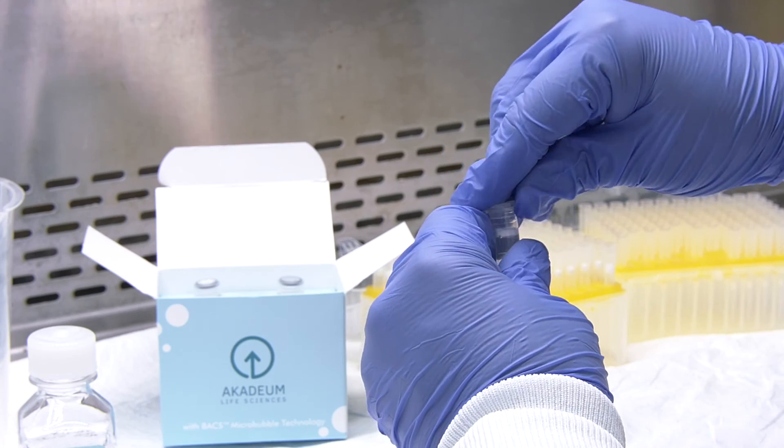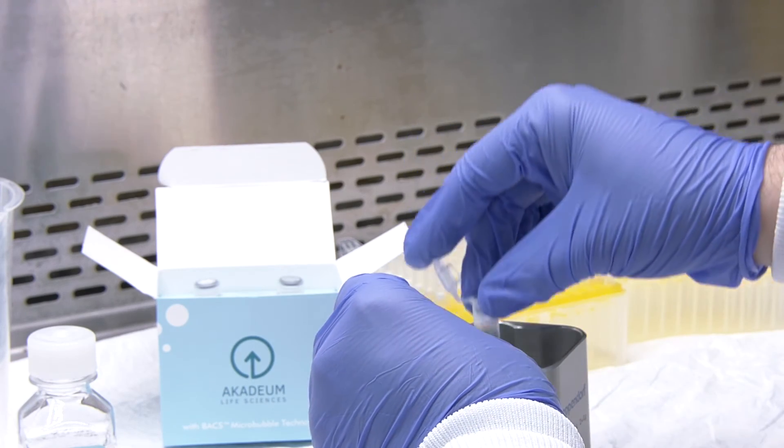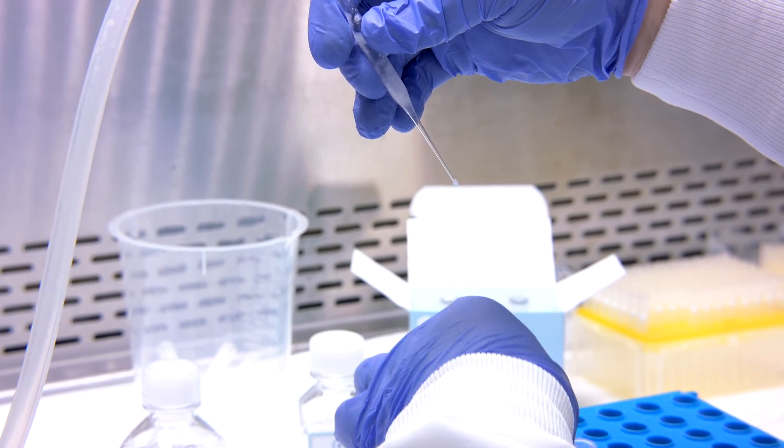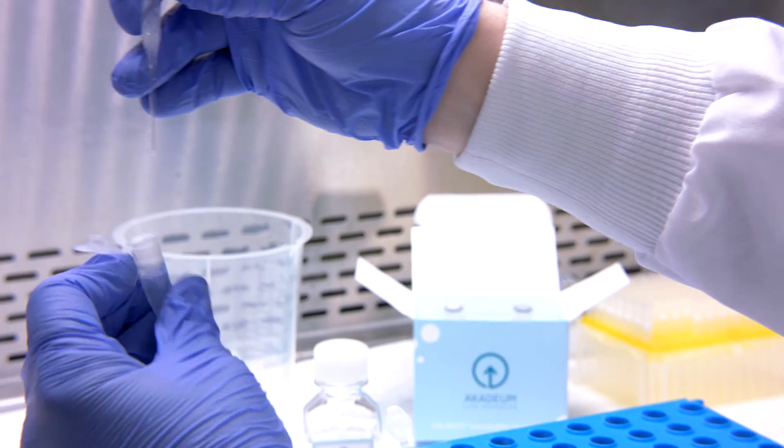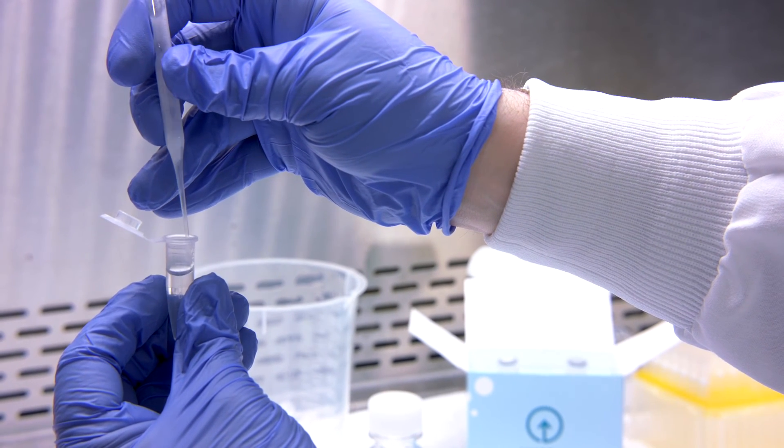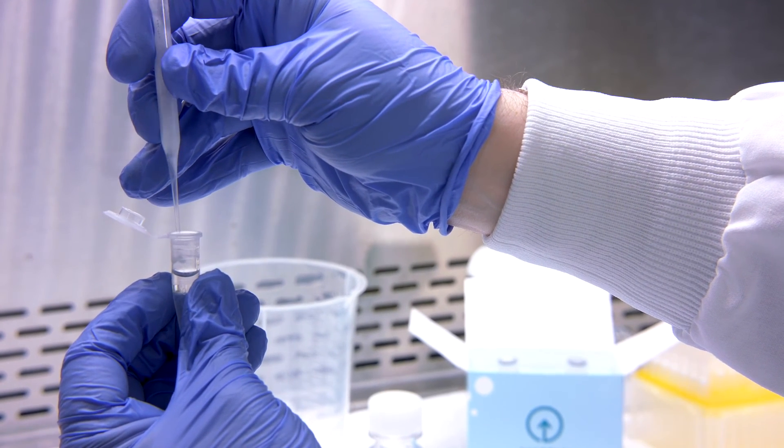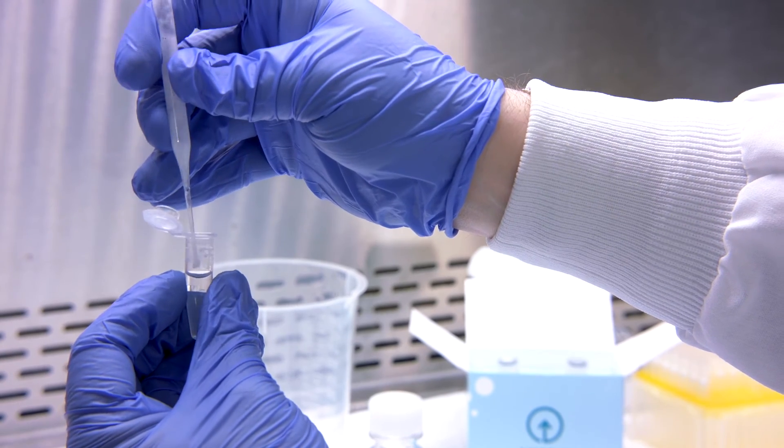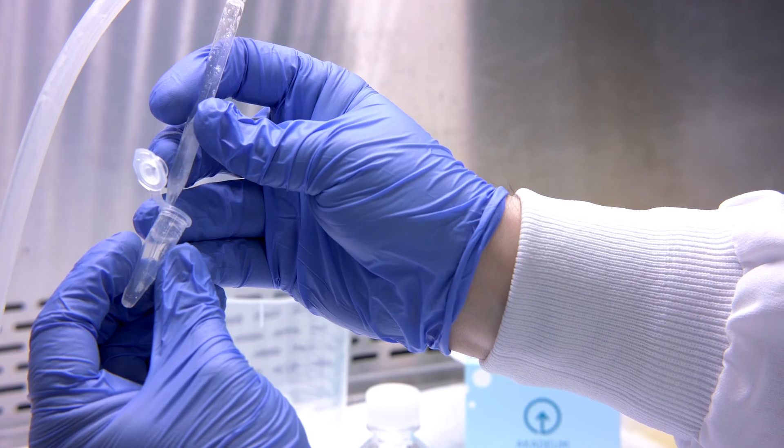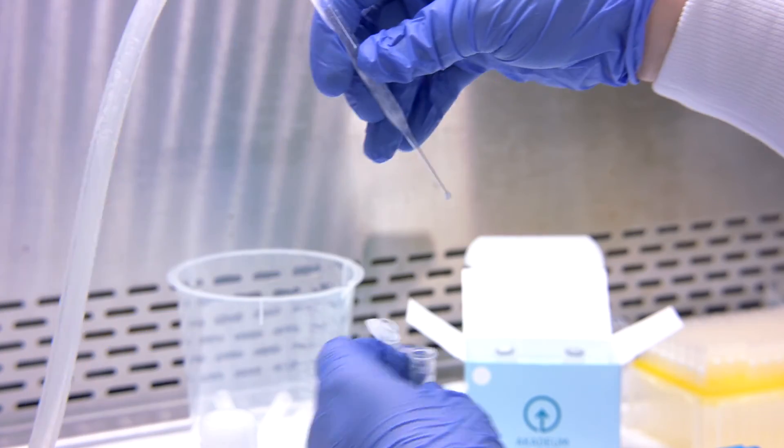We will aspirate the micro bubbles from the top of our samples. Careful not to disrupt the bubbles as you move the tube. Start at the top, aspirate the micro bubbles from the top of the sample, and then remove the rest of the supernatant. Careful of your pellet at the bottom.